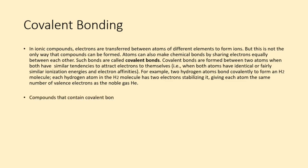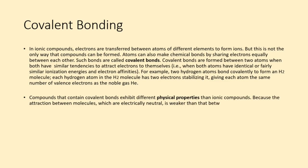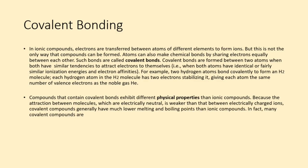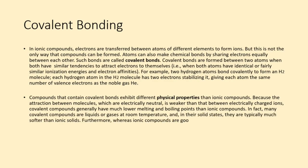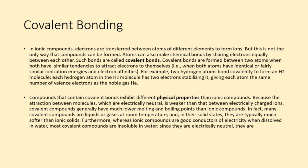Compounds that contain covalent bonds exhibit different physical properties than ionic compounds. Because the attraction between molecules, which are electrically neutral, is weaker than that between electrically charged ions, covalent compounds generally have much lower melting and boiling points than ionic compounds. In fact, many covalent compounds are liquids or gases at room temperature, and in their solid states, they are typically much softer than ionic solids. Furthermore, whereas ionic compounds are good conductors of electricity when dissolved in water, most covalent compounds are insoluble in water. Since they are electrically neutral, they are poor conductors of electricity in any state.